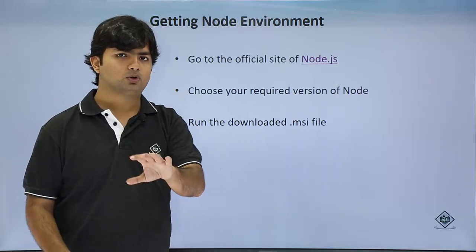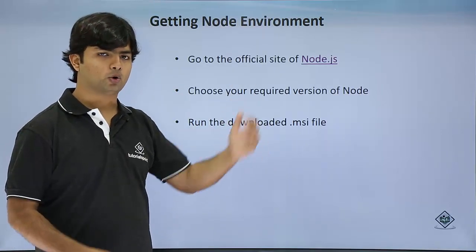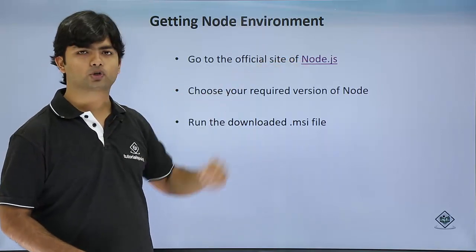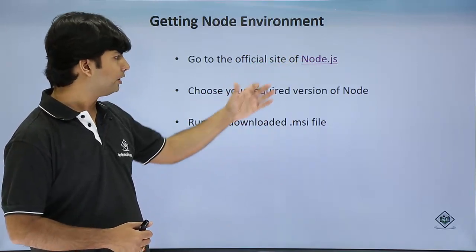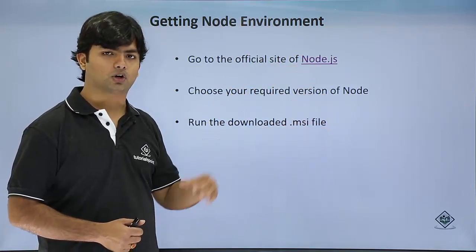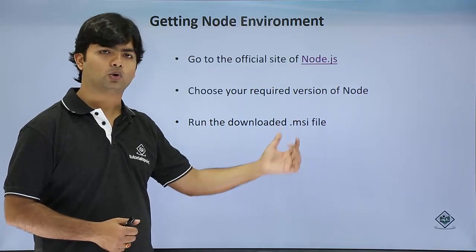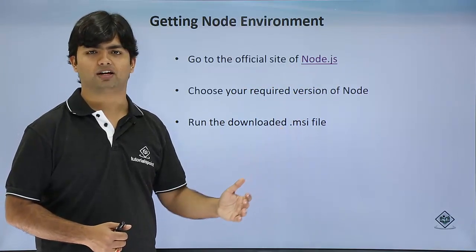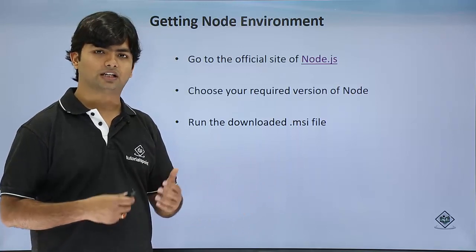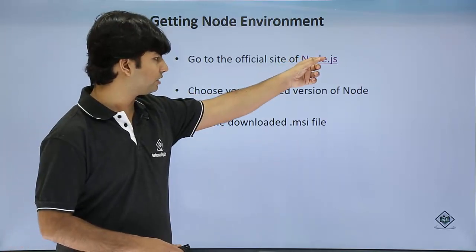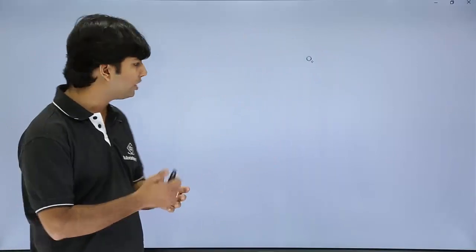Once you are done with those things, this is the step to install Node.js. First of all, you'll have to go to the Node.js official website. Then you can choose the required version of Node.js which you want to install and download the MSI file. Once you have the MSI file, you can start the setup wizard. So let's go to the official website to see how we can do the downloading.